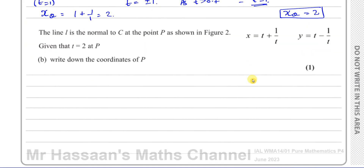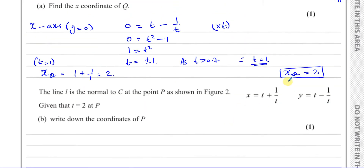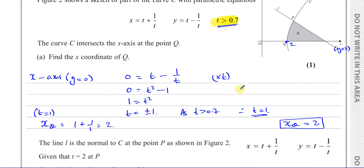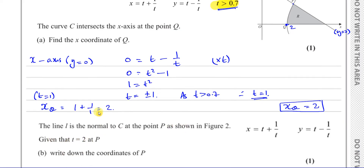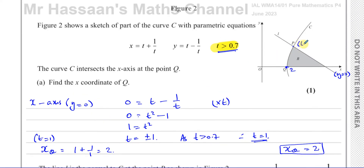For part B, the line L is a normal to the curve at the point P as shown in figure 2. Given that t equals 2 at point P, we need to find the coordinates of P. So at P, t equals 2, and we need to find what those coordinates are.